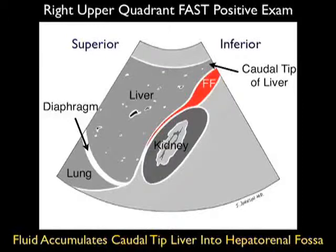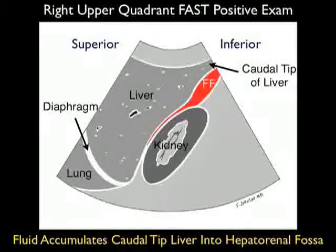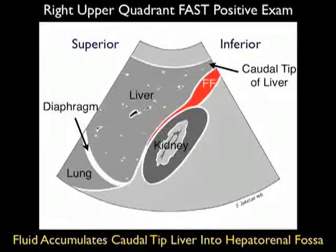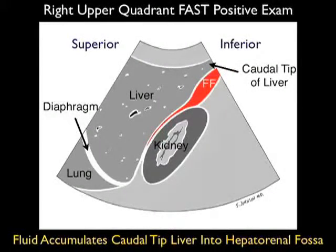Now this is very important to emphasize: many times fresh fluid can only be seen around that caudal tip of the liver, and then it will move into that hepatorenal interface or Morrison's pouch.